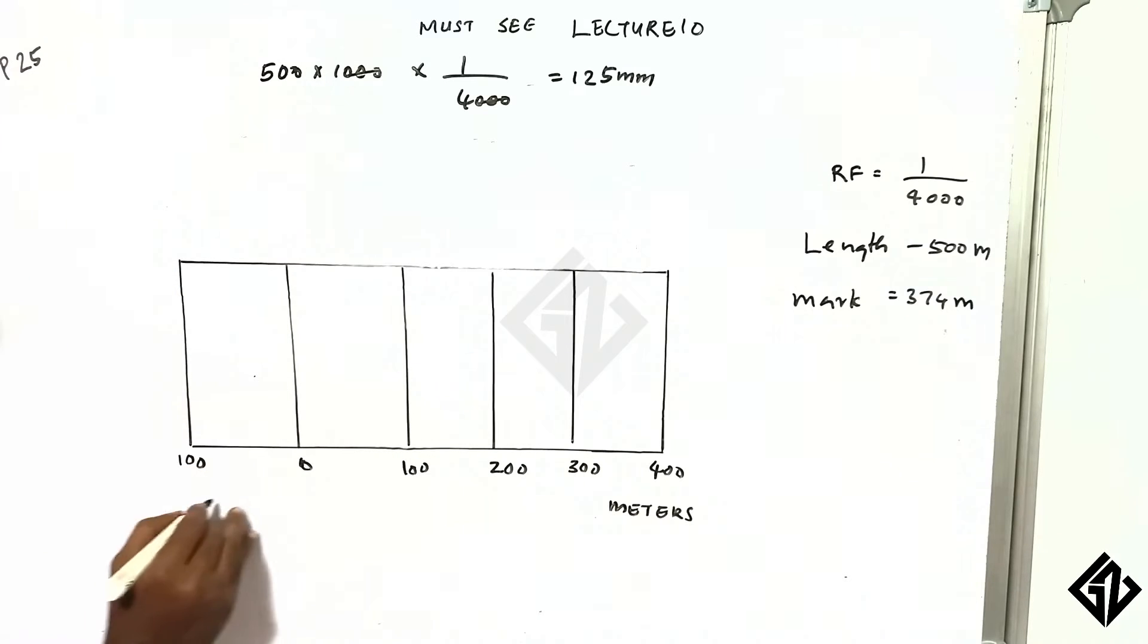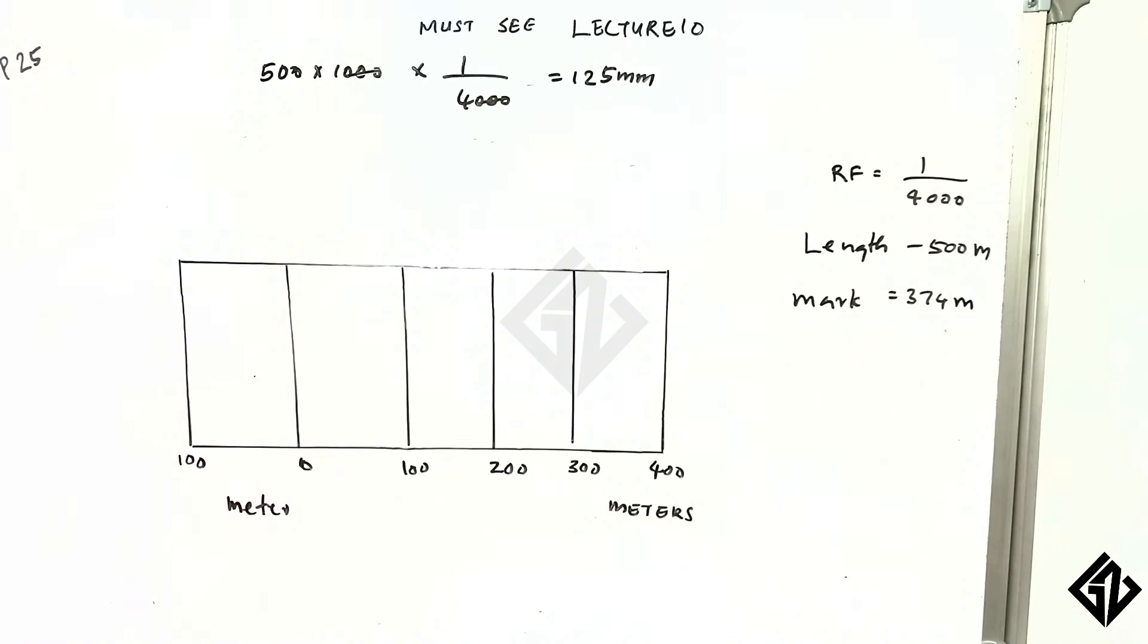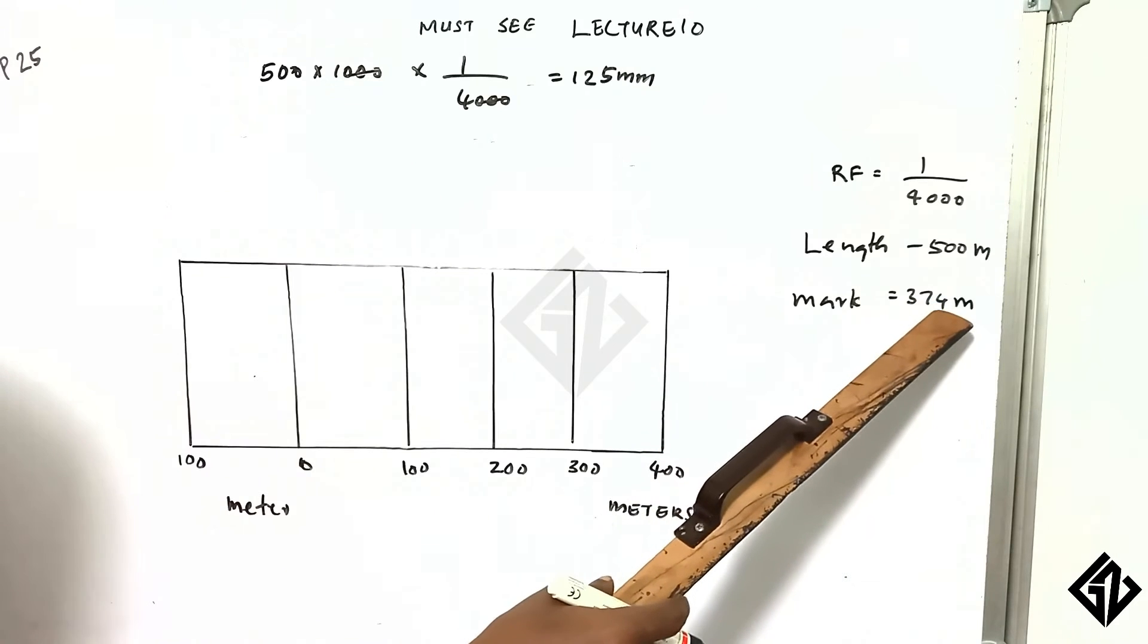If I divide this main division, I divide them by 10 meters. If we divide the unit again, we divide it by 1 meter. Therefore, we have to give the accuracy of 1 meter.